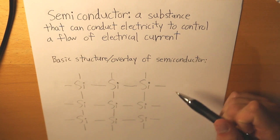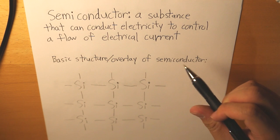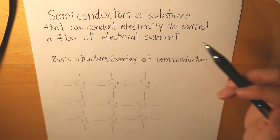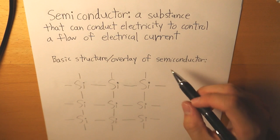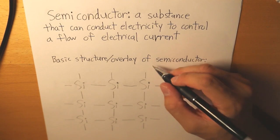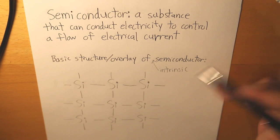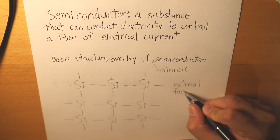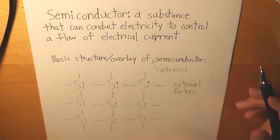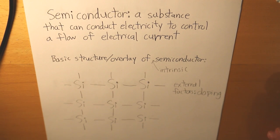In an intrinsic semiconductor, these bonds are perfect — all of them are silicon. But what happens if we add an atom that doesn't have four valence electrons? That semiconductor is going to be extrinsic. When we add external factors to an intrinsic semiconductor, that process is simply called doping.